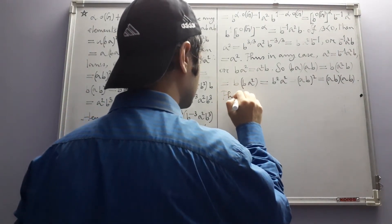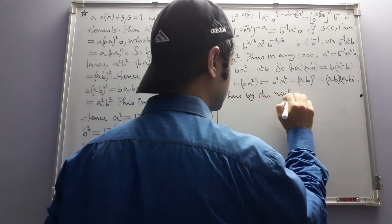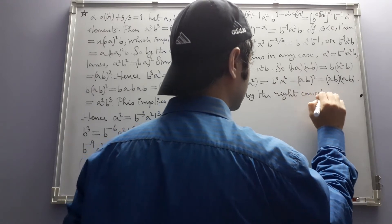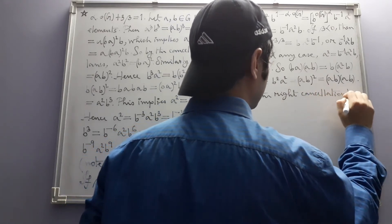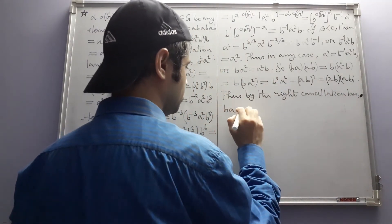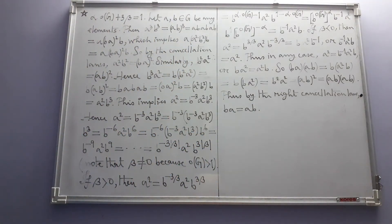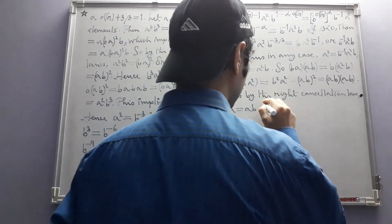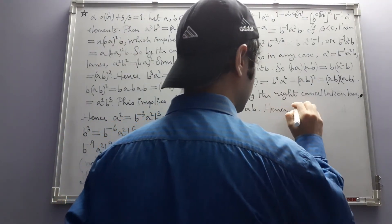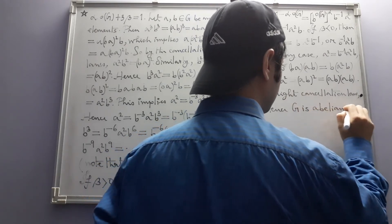Looking at the first and last terms: BA·AB = AB·AB. Using the right cancellation law, we can cancel AB from both sides, giving BA = AB. This shows that A and B commute with each other. But A and B were arbitrary elements of G, so all elements of G commute with one another. Hence G is abelian.